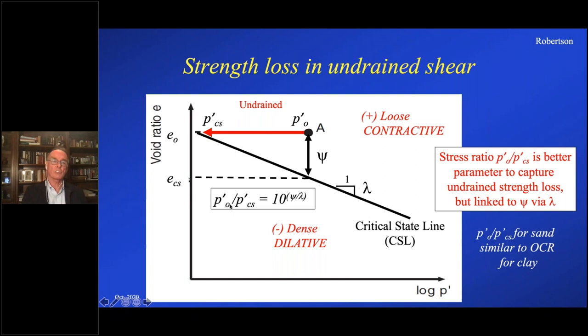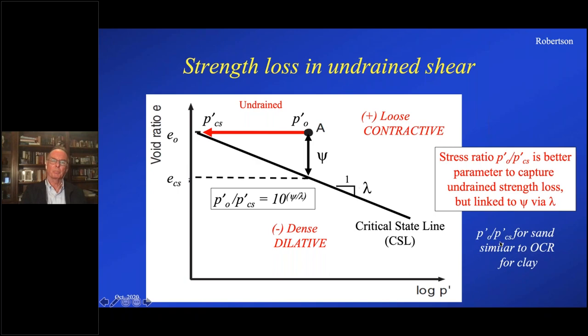As opposed to the indirect way via state parameter, which has to be linked to the slope of the critical state line. There is a relationship between the two, and Bean and Jefferies talk about that in their book — they quite often show plots not just of state parameter, but the ratio of state parameter divided by the slope. In a way, that ratio for sands is analogous to the OCR ratio for clays. OCR is a ratio of stress linked to the normal consolidation line, whereas this is a ratio of stress linked to the critical state line.